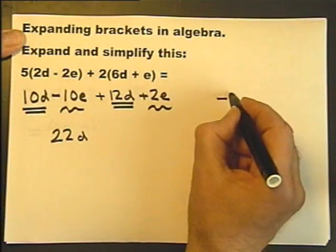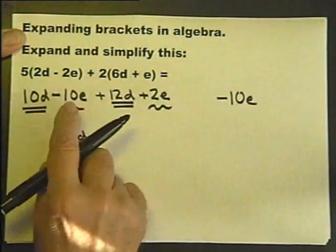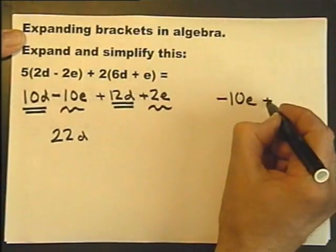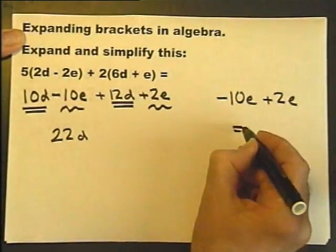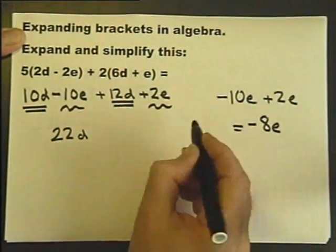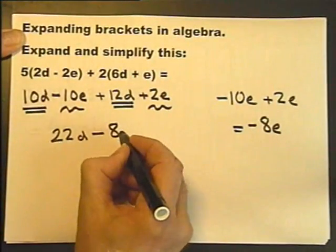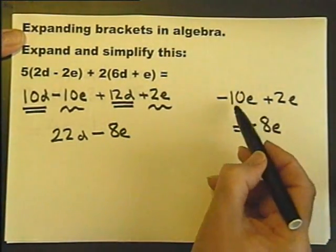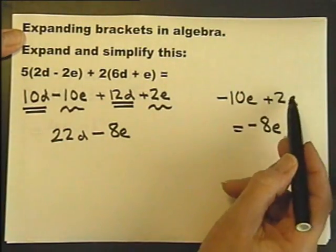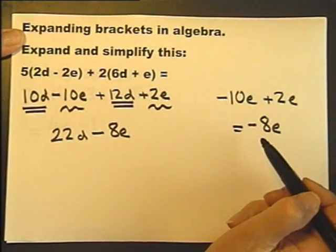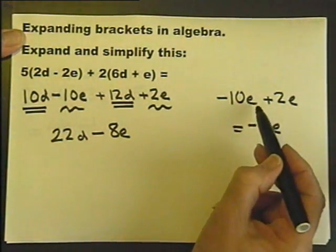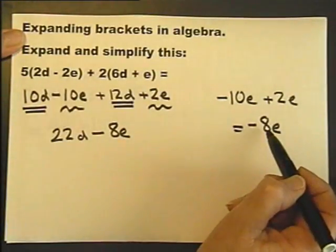I'm actually saying what the answer is. Sorry about that. I was saying the answer instead of how I'm working it out. Have a think about that. Minus 10E plus 2E is minus 8E.